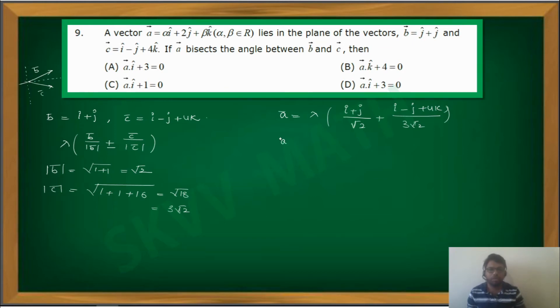Now if you simplify this, a bar equals 3 root 2, you can take LCM. So lambda by 3 root 2, the LCM. So 3i plus 3j. Now 3i plus i is 4i. Here we have 3j minus j will be 2j. Later we have only 4k, so plus 4k. Now what is the coefficient of j in this? Can you tell me the coefficient of j? 2 lambda by 3 root 2, which is the coefficient of j.